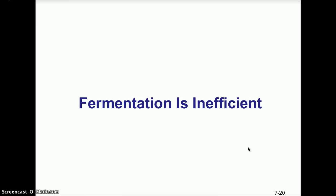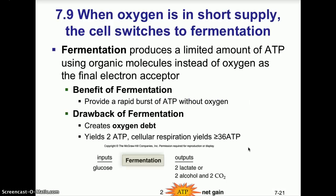There are organisms that live in the absence of oxygen — this is where we come into anaerobic respiration. In anaerobic conditions, oxygen is not available and we see a process called fermentation. Unlike cellular respiration, fermentation is an inefficient process, but it allows organisms such as ourselves to get a quick fix of energy. Fermentation produces a limited amount of ATP using organic molecules instead of oxygen as the final electron acceptor. It occurs after glycolysis in the cytoplasm when oxygen is not available, providing a rapid burst of ATP. The drawback is it creates greater oxygen debt and only yields 2 ATP, where cellular respiration yields far greater amounts.